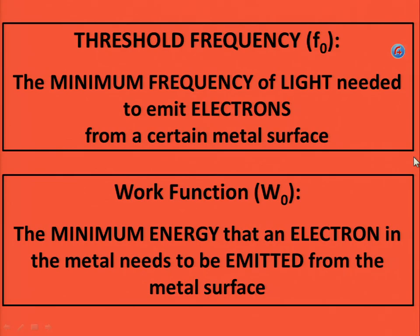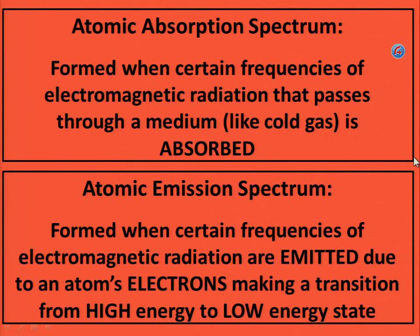Atomic absorption spectrum: formed when certain frequencies of electromagnetic radiation that pass through a medium are absorbed. Atomic emission spectrum: formed when certain frequencies of electromagnetic radiation are emitted due to an atom's electrons making a transition from a high energy to a low energy state. Thank you.